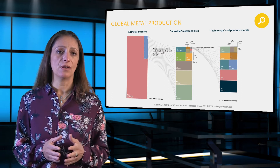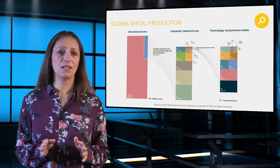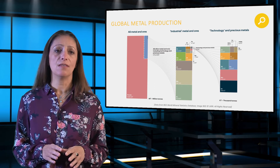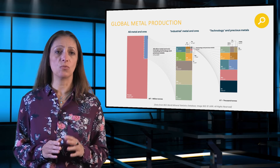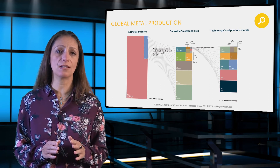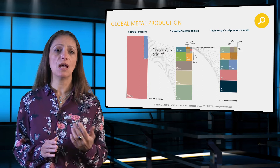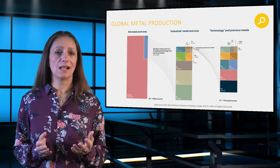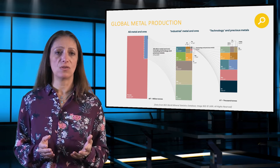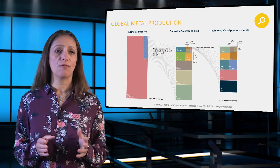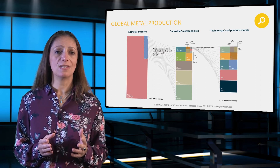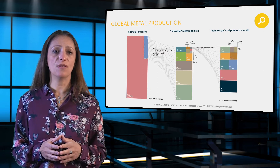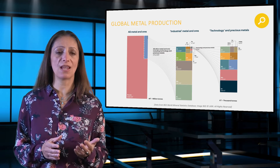For example, if there's no robust understanding of the entirety of the cobalt supply chain, then all the industries associated in one way or another with that commodity are making decisions based on weak data. This may result in supply issues. Similarly, if we underestimate production, this can have direct impacts on commodity prices with knock-on effects on the overall supply chain.